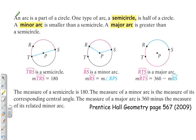An arc is a part of a circle. One type of arc, a semi-circle, is a half circle. A minor arc is smaller than a semi-circle, and a major arc is greater than a semi-circle. Since both minor arcs and major arcs are being compared to a semi-circle, it's best to start off with talking about a semi-circle.